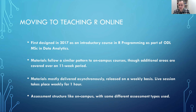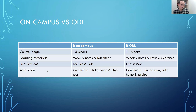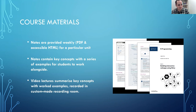The assessment structure is quite similar to on campus — a series of continuous assessments — but we use some different styles of assessment types that lean into the adjustments we've made to how we teach the course. The main real differences between on-campus and ODL are that the student interaction from the lab session is no longer there, replaced with a live session. In terms of materials, we provide notes weekly, now in PDF and a nice accessible HTML format, with each unit corresponding to a week's worth of learning.